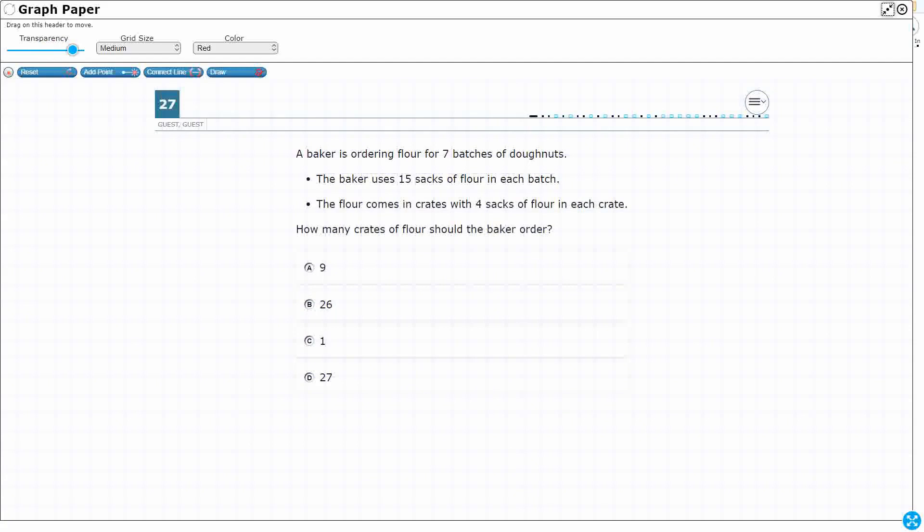The baker is ordering flour for seven batches. What I'm going to do is just draw squares, and these squares will represent our batches. I'm going to do three in this second row to kind of represent, there we go, there's my seven batches.